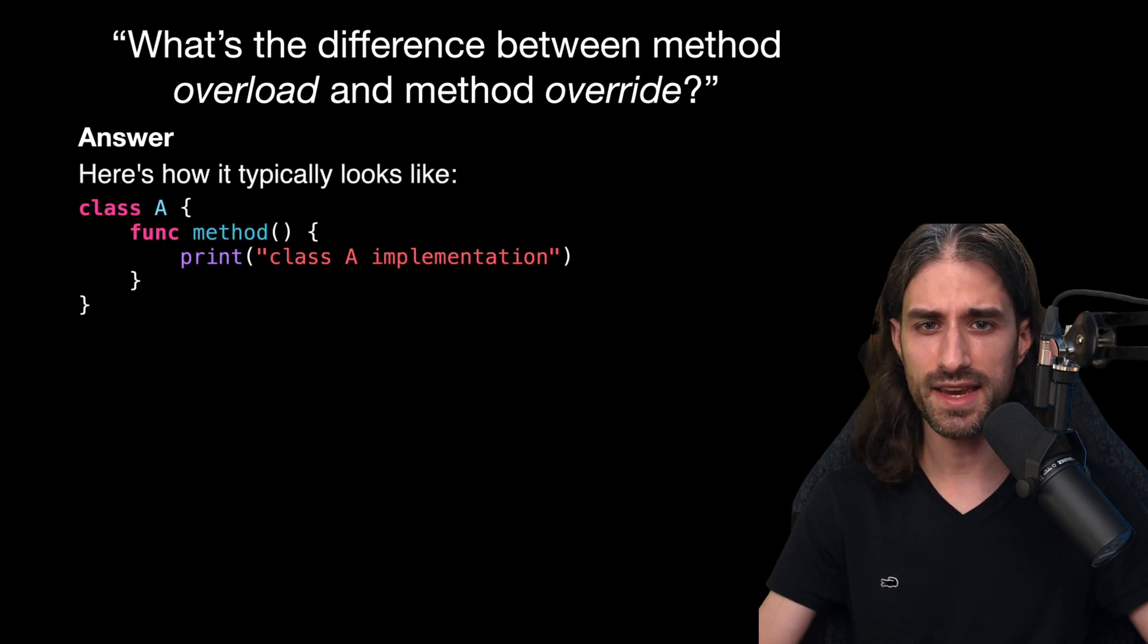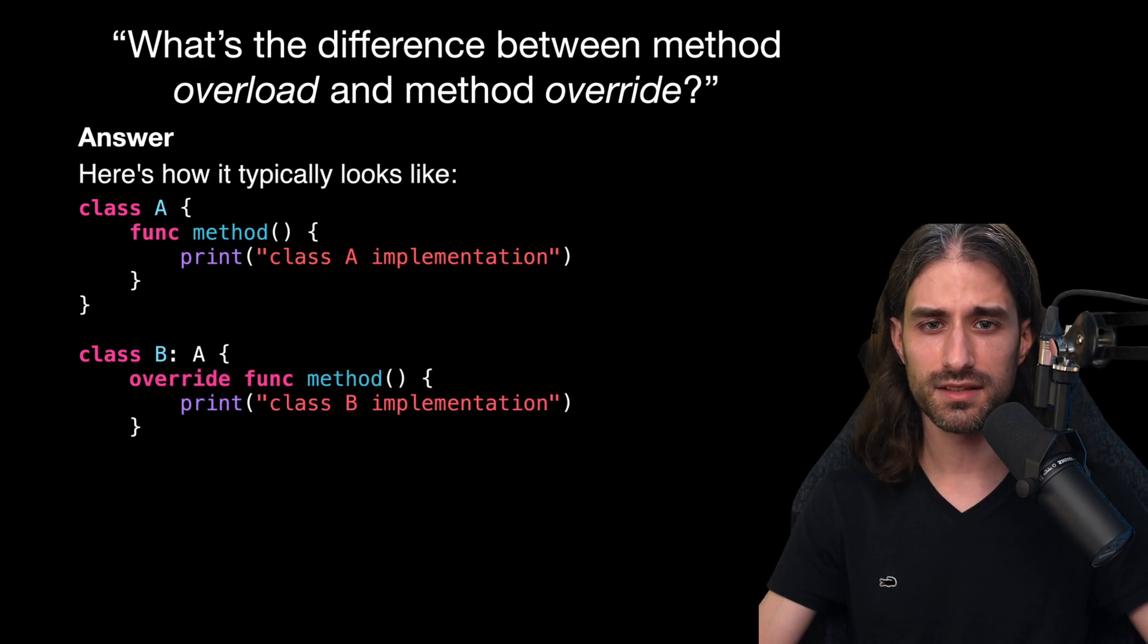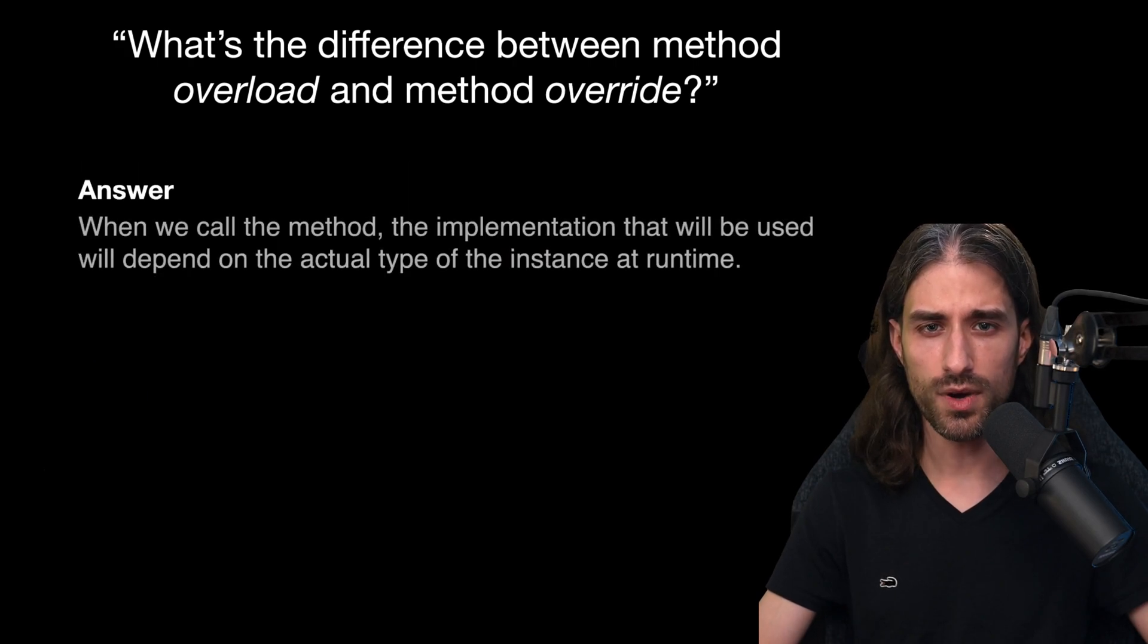We have a first class A that implements a method, and then we introduce a second class B which inherits from class A. This second class overrides the implementation of the method so as to provide a different behavior than the one that was implemented in the parent class. What will happen is that when we call the method, the implementation that will be used will depend on the actual type of the instance on which we have called the method at runtime.